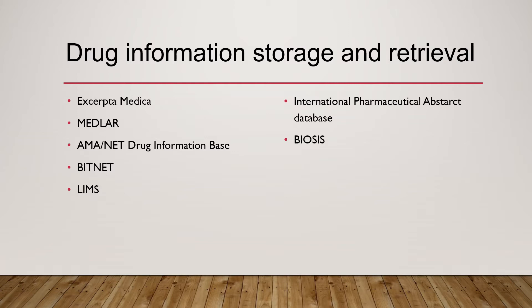The first one is Excerpta Medica. It is an information system which provides nearly 25 lakh abstracts in its database and covers 4000 biomedical journals. This system was computerized way back in 1968, and more than 2 lakh 50,000 records are added to this database on a yearly basis. Excerpta Medica is an information retrieval service.